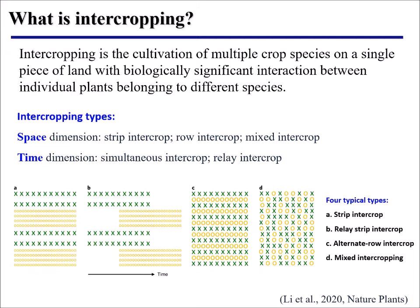Panel B is called relay strip intercropping — that means the two species have one overlapping period where they are grown together. Panel C is called alternate row intercrop, with a row-by-row species arrangement. Panel D is called mixed intercrop, where two different species grow in a total mixture.